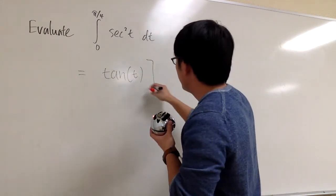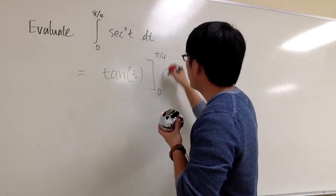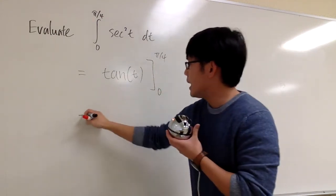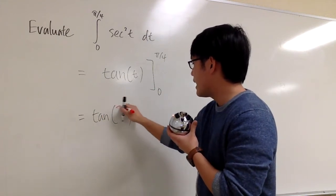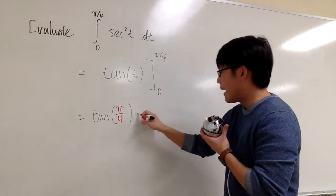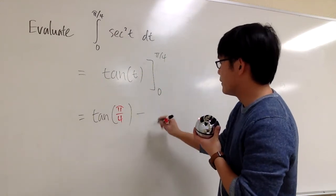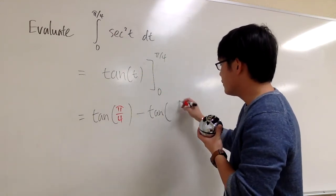And I'm just going to evaluate from 0 to pi over 4. And now let's plug in pi over 4 into t. We're looking at this as tangent pi over 4 minus, plugging 0 into this t, tangent of 0.